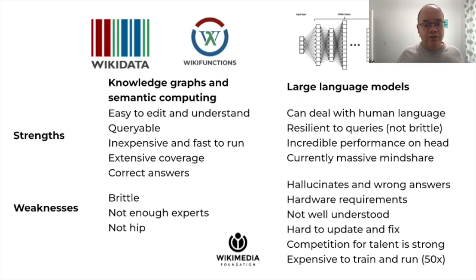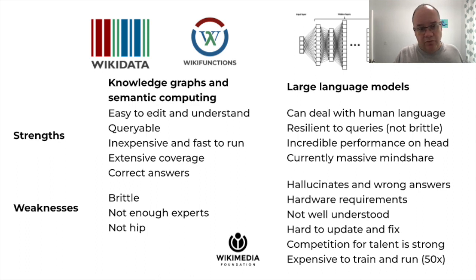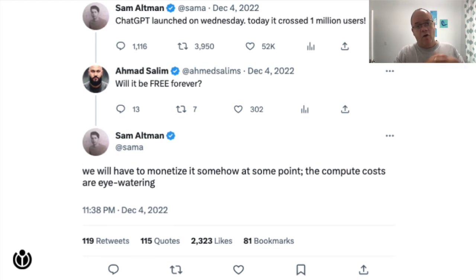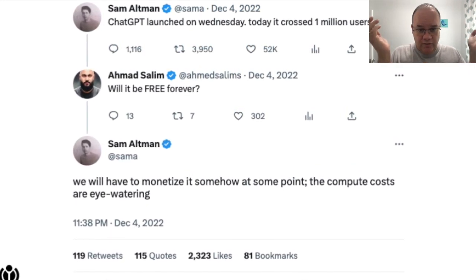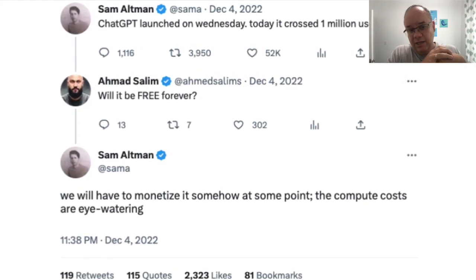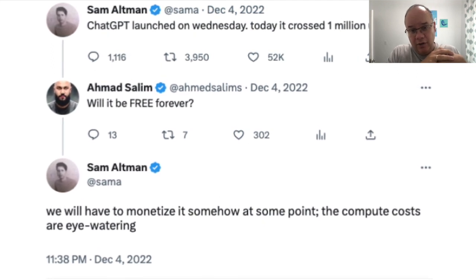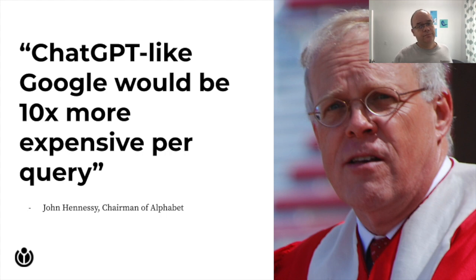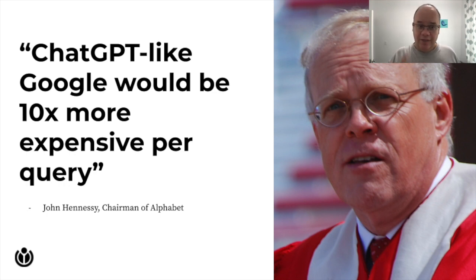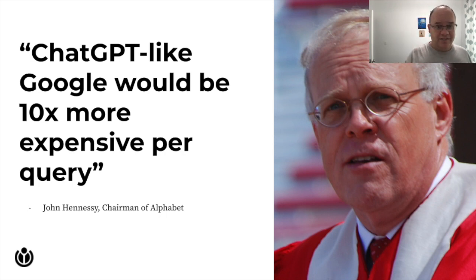Also, large language models are super expensive to train and run. My estimate is that it's about 50 times as expensive to run a large language model for question answering than it is to use a knowledge graph. Sam Altman, the CEO of OpenAI, the company making ChatGPT, described the compute cost of ChatGPT as eye-watering — and don't forget, he made a really sweet deal with Microsoft about running it on Azure, and got billions of dollars for that. John Hennessy, the chairman of Google and a former computer science professor at Stanford, said that running a ChatGPT-like system at Google would be 10 times more expensive. 10x is a lot for your running costs.